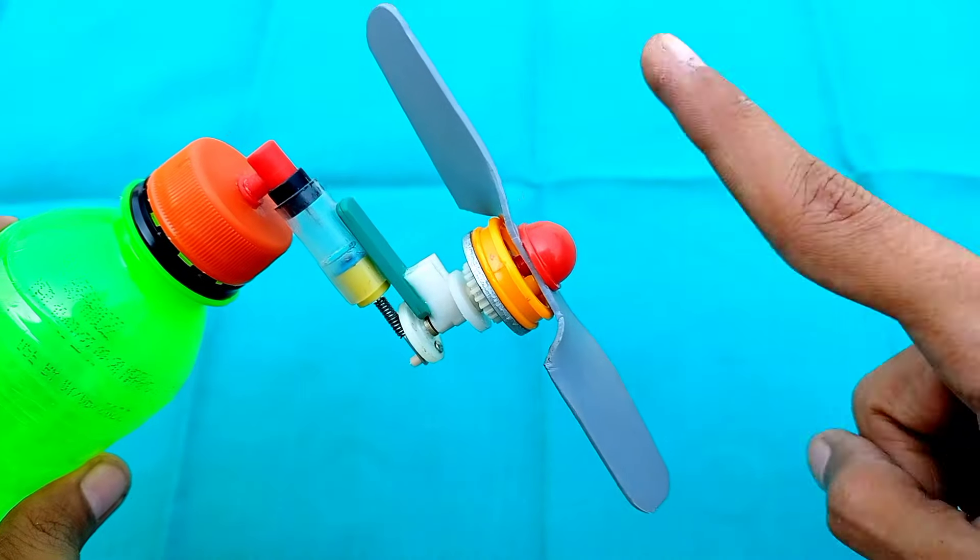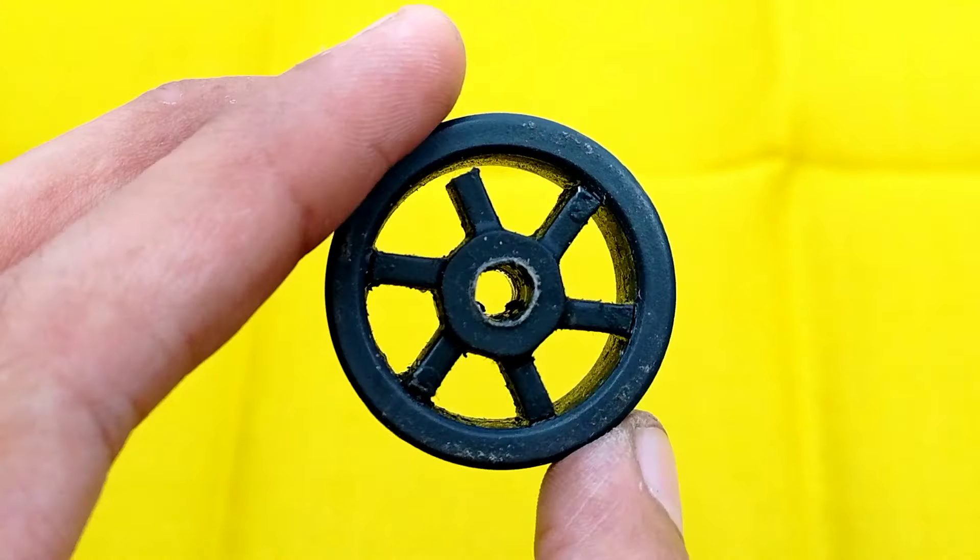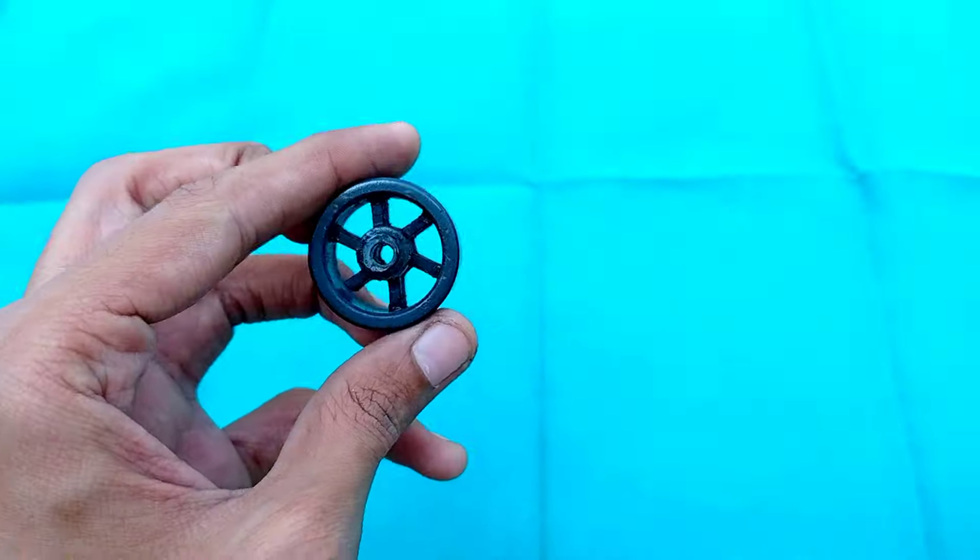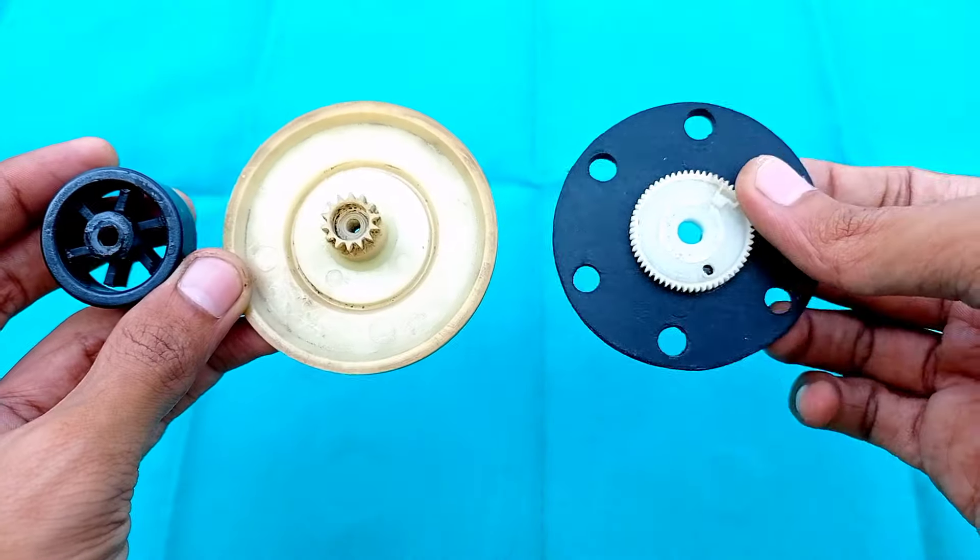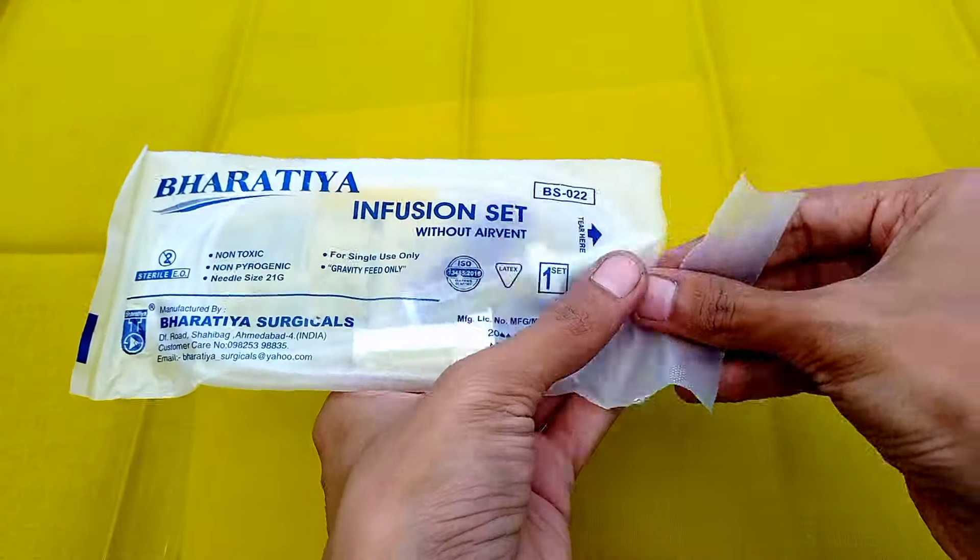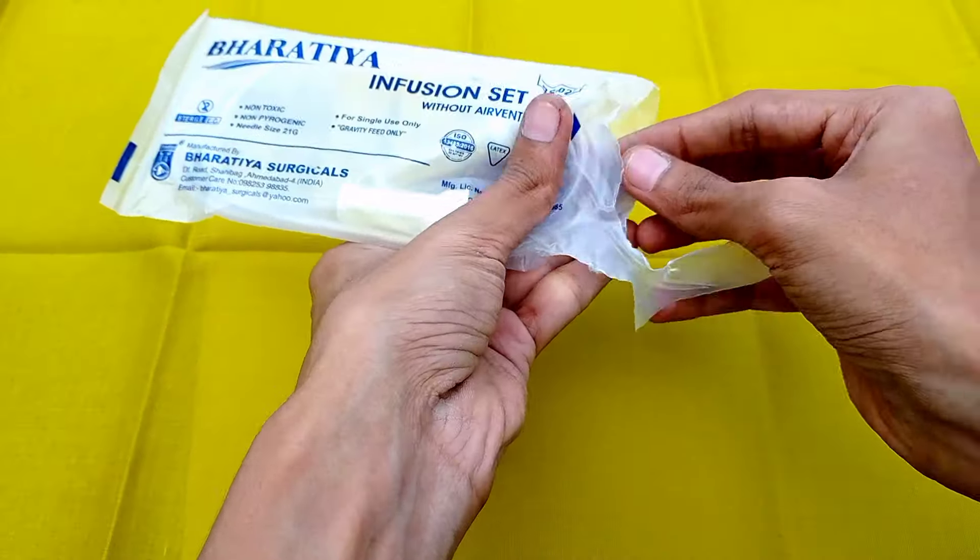If you don't have this type of propeller or any type of propeller, you can use this type of wheels as a propeller. This propeller comes in very different shapes and sizes. To control the speed of compressed air, you can use this IV set or saline set.